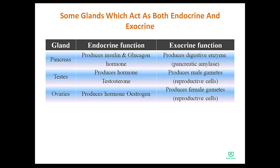So endocrine glands secrete hormones while exocrine glands secrete enzymes. In the endocrine function, the pancreas produces insulin and glucagon hormones. In the exocrine function, it produces a digestive enzyme called pancreatic amylase. The second gland that has both endocrine and exocrine functions is the testes.